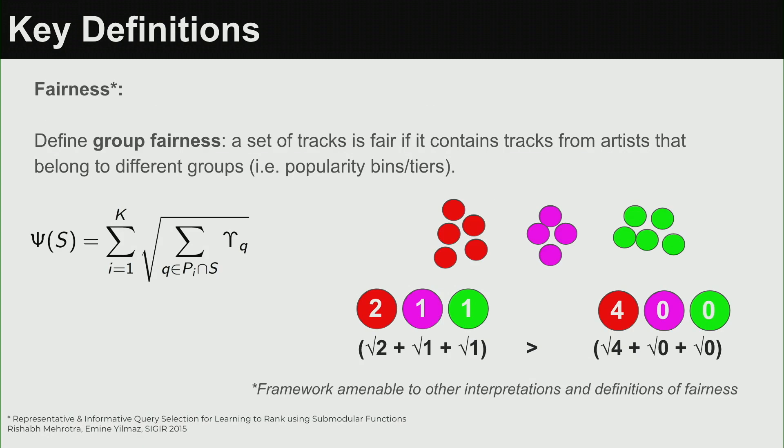We stick with one definition proposed back at SIGIR 2015. We define group fairness: we have a collection of artists divided into popularity groups based on percentiles in the popularity spectrum. On the long tail you have very niche artists not much exposed; on the other side you have head artists like Ed Sheeran and Lady Gaga. We define these different groups.